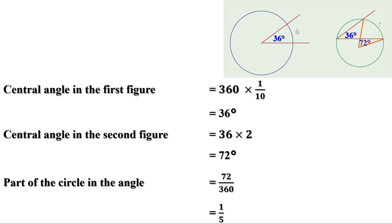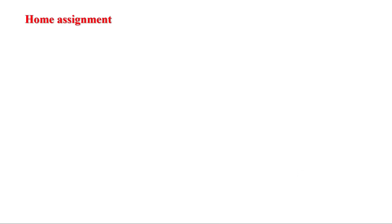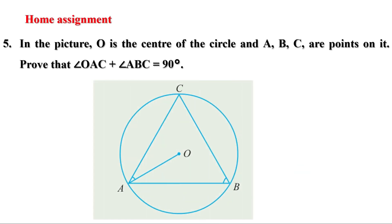Today we have done some problems on page 54. Now there is a homework: in the picture, O is the center of the circle and A, B, C are points on it. Prove that angle OAC plus angle ABC equals 90 degrees. In the next video we shall discuss the remaining problems. Till then, bye.